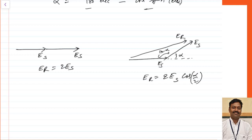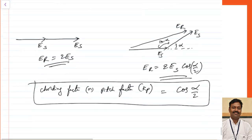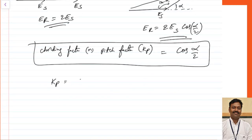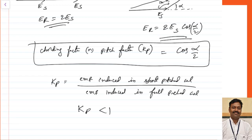We can tell that by employing short pitched winding, the EMF induced per coil is decreased compared to a full pitched coil. The factor by which it is decreased is called the cording factor or pitch factor, represented by Kp, where Kp equals cos(α/2). This will always be less than 1. Kp is defined as the EMF induced in the short pitched coil divided by the EMF induced in the full pitched coil.